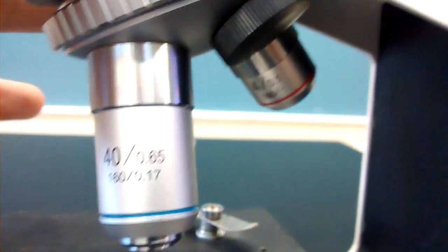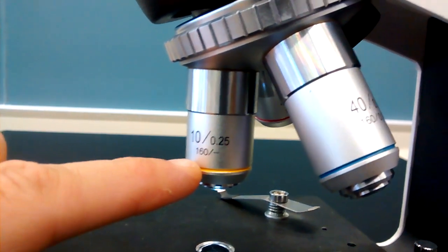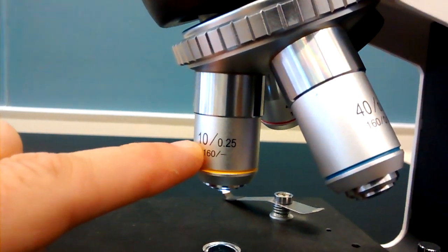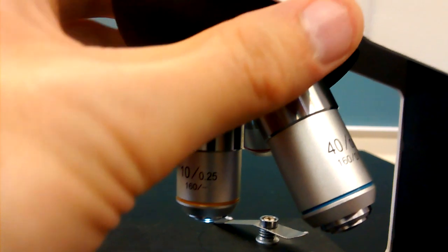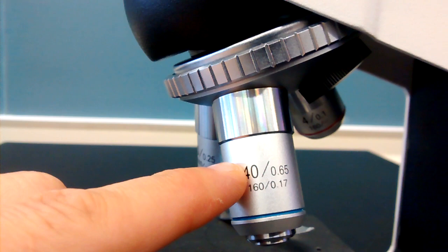The next lens is called our low power lens. It has this yellow band on it. And all by itself, it will magnify ten times. Finally is our high power lens, which has this blue band on it. And that will magnify 40 times.